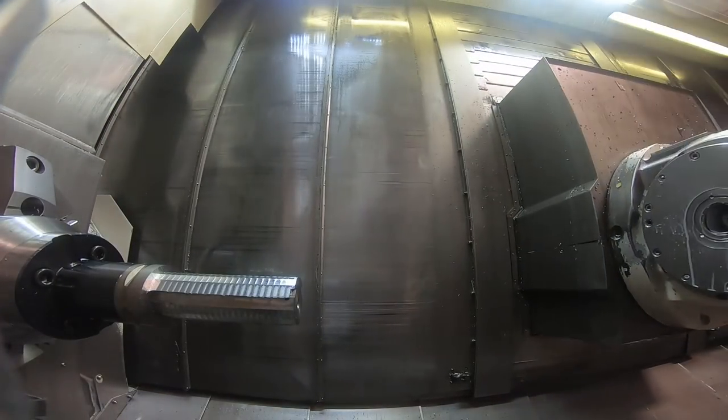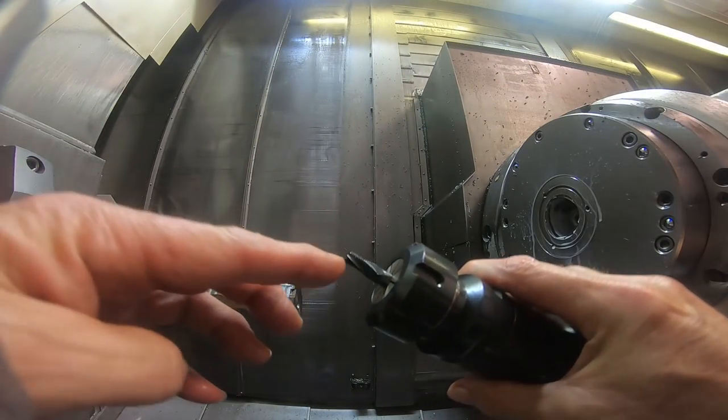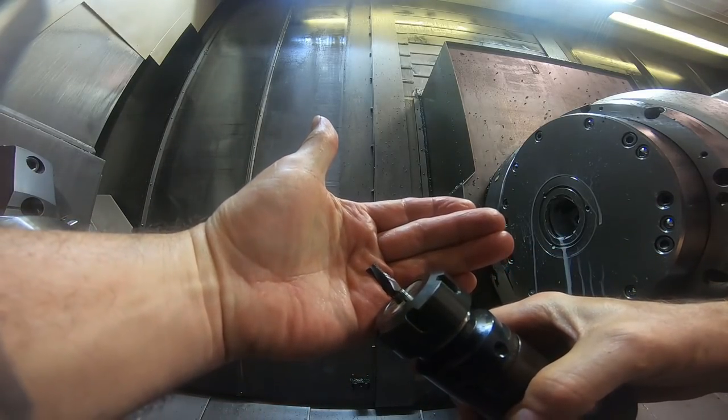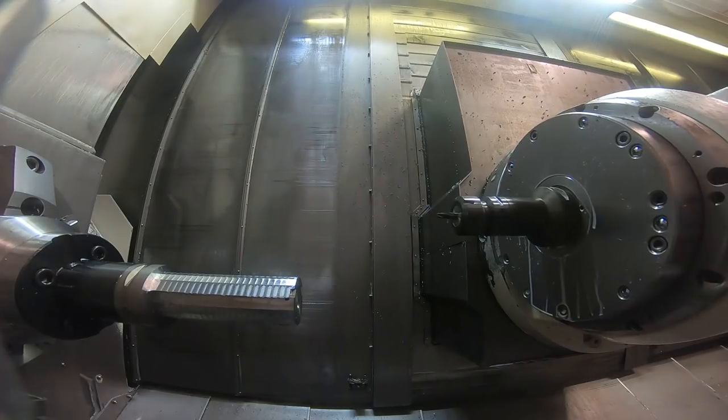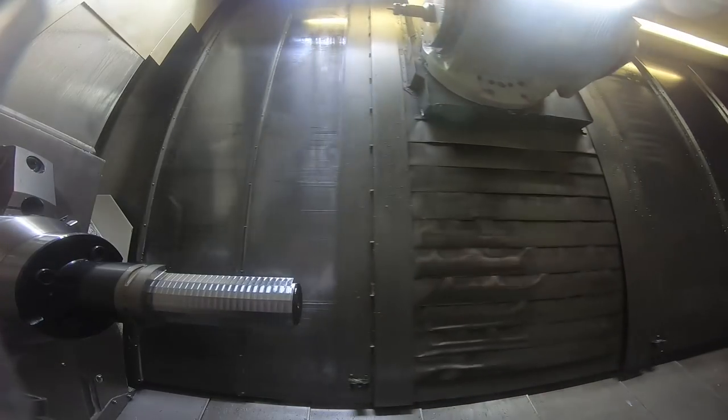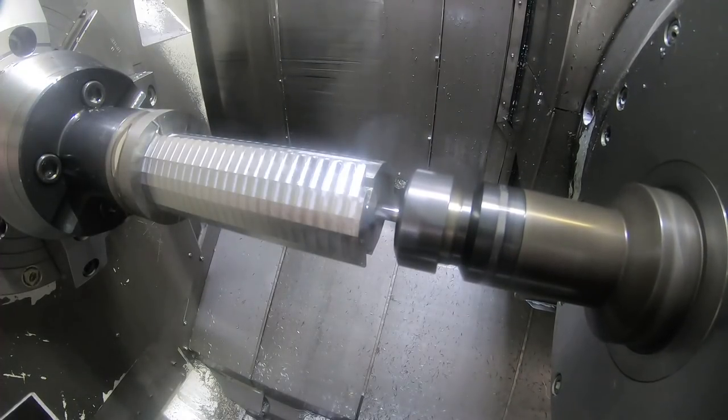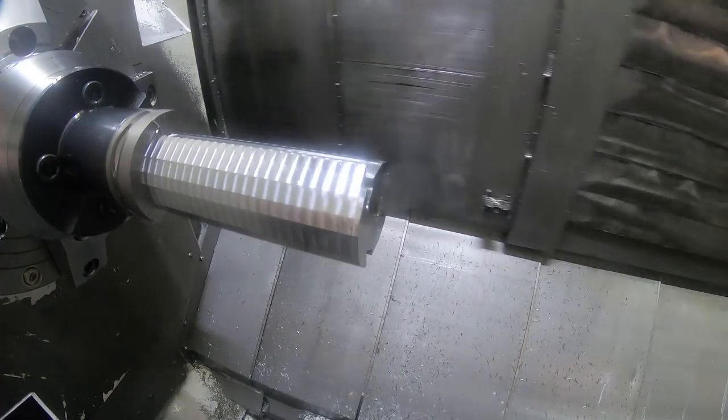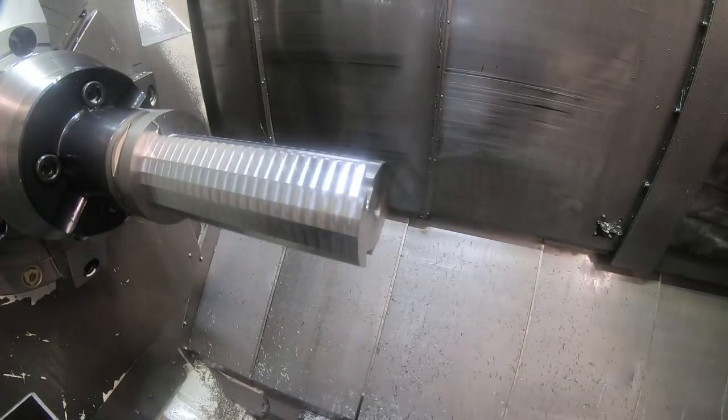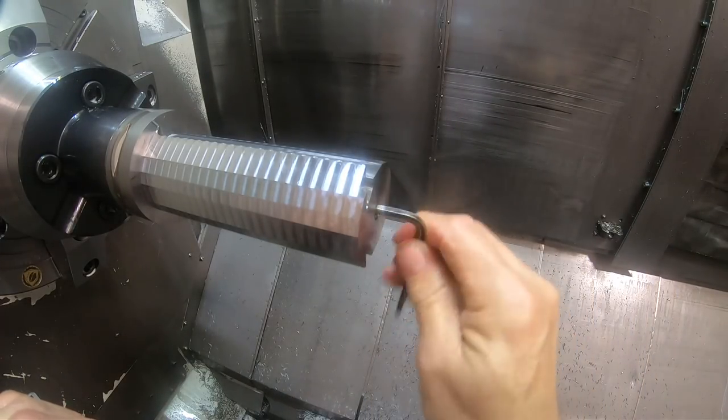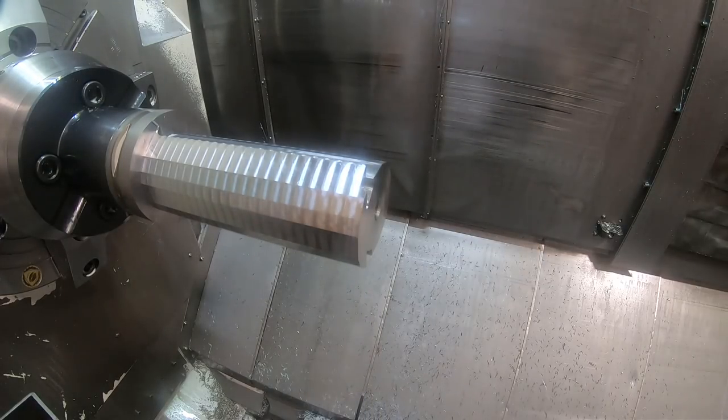And the last tool is an eighth inch NPT thread mill with a pipe plug that plugs off the coolant hole in the middle. I wanted to make this fit flush or below the face so that it wouldn't hit anything.